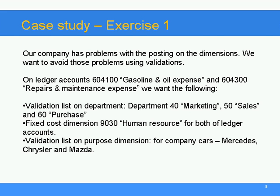Exercise 1: Our company has problems with posting on dimensions. We want to avoid those problems using validation. On ledger account 604100 gasoline and oil expense, and 604300 repairs and maintenance expense, we want the following validation list on Department: Department 40 Marketing, 50 Sales, and 60 Purchase. Fixed cost dimension 9030 human resource for both accounts. Validation list on purpose dimensions for company cars: Mercedes, Chrysler, and Mazda.